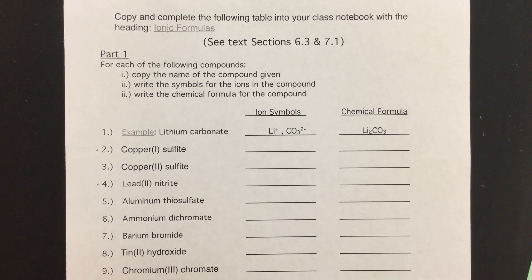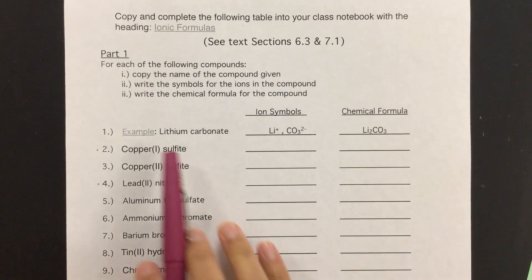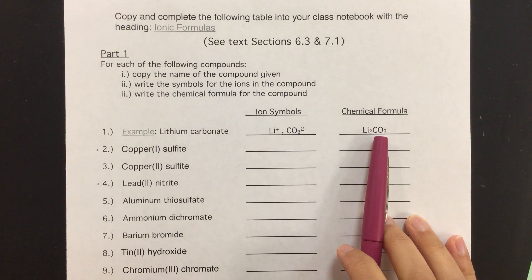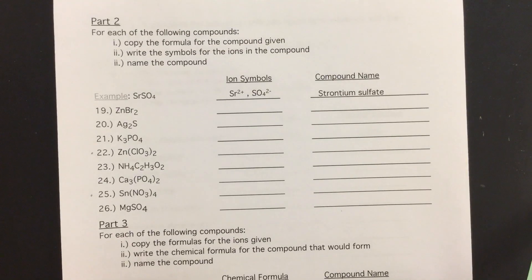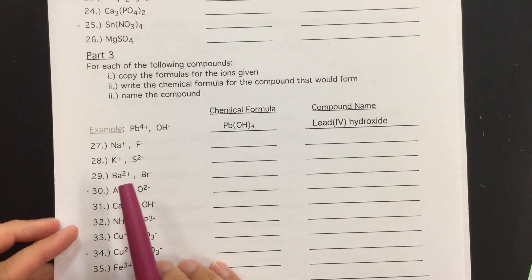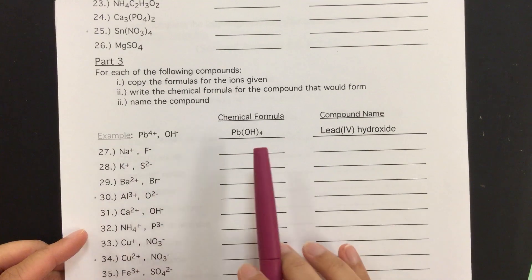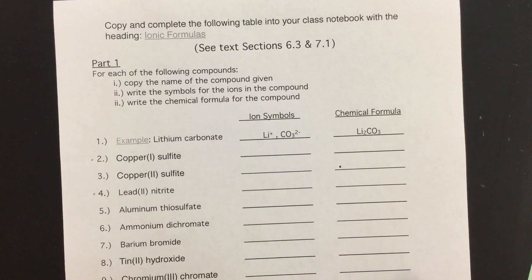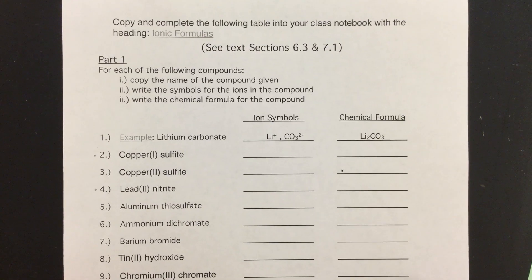Hey chemistry kids! This tutorial video is going over your ionic formulas homework assignment. This assignment is broken up into three parts. Part one, you are given the name and asked to write down the symbols and chemical formula. Part two, you are given the formula and asked to write the symbols and the name. And part three, you are given the ion symbols and asked to write the formula and the name. I'm going to demonstrate two examples from each part and hopefully that'll be enough to get you going on the rest of it on your own.